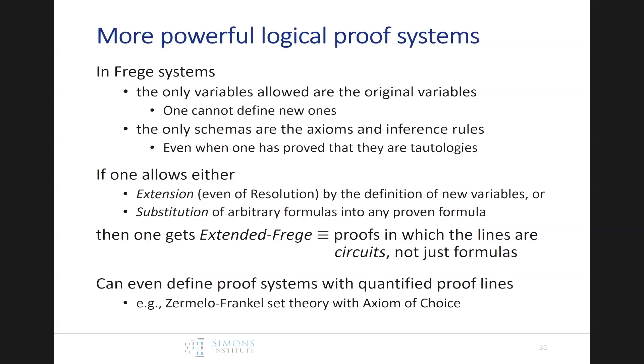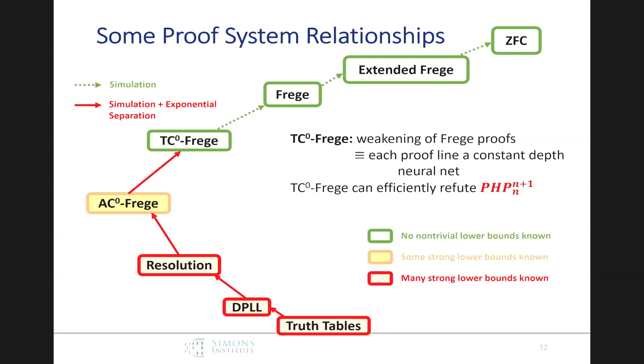But we don't have to stop here. We can even define proof systems with quantified proof lines. Hey, why not do the Zermelo-Frankel set theory with the axiom of choice? That could be a proof system. So if we take, in these directions, here are some proof system relationships we know. So truth tables, DPLL, resolution AC0 Frege, and ZFC, and there's no reason to see, say that it stops here. We don't believe that there's actually any stopping. There might be an infinite family of more and more powerful proof systems. There's one I haven't mentioned here, but, this is TC0 Frege. It's a different weakening of Frege proof. Each line here consists of a constant depth neural net, basically. They can count, so they can do Pigeonhole principle. And the reason why I didn't say anything more about these is we have no idea about lower bounds for any of these systems up here. So we're gonna focus on systems where we can actually do some analysis on them now.